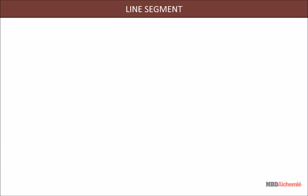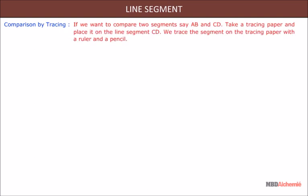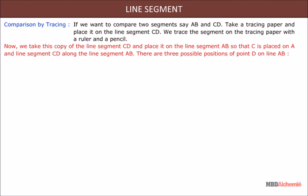In this concept we will learn about comparison of line segments by tracing. If we want to compare two segments, say AB and CD, take a tracing paper and place it on the line segment CD. Trace the segment on the tracing paper with a ruler and a pencil.